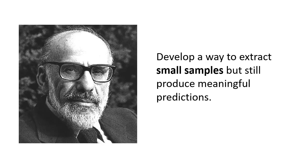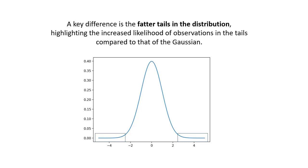William Gossett was an English statistician who worked for the Guinness Brewery. He developed different methods for the selection of the best yielding varieties of barley. Gossett found big samples tedious and tried to develop a way to extract small samples but still come up with meaningful predictions. Due to the Guinness policy, he was not allowed to sign papers with his own name, so all his work appeared under his pen name, Student. The t-distribution is a family of distributions that look almost identical to the normal distribution curve, only a bit shorter and fatter. It's used instead of the normal distribution when you have small samples — the larger the sample, the more the t-distribution looks like a normal distribution. For samples larger than 20 degrees of freedom, the distribution is almost exactly like a normal distribution.